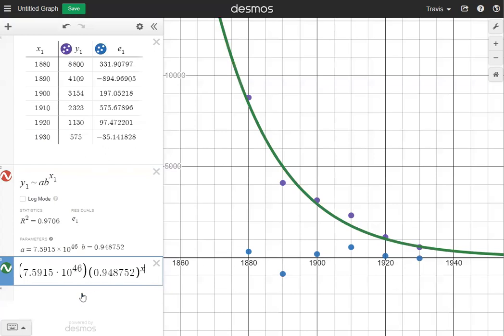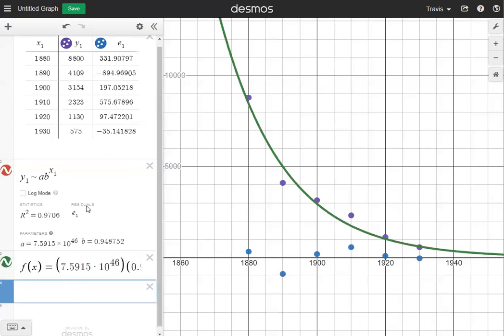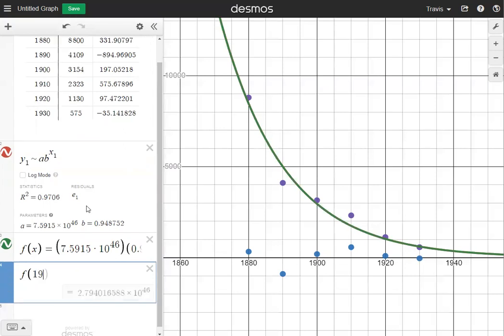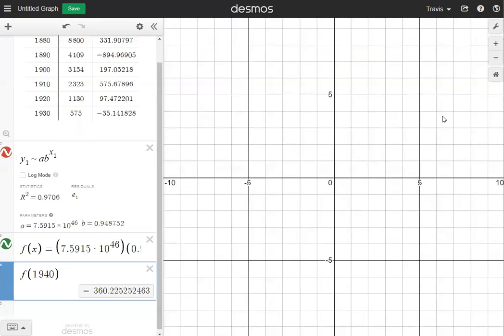We're going to click in box number four and type in f of 1940. So our x value is 1940, and our y value is going to show up at the bottom, which we can round to the nearest whole number, which is 360. So if this chart was to continue down to 1940, the y value would be 360. So that is an exponential regression, and I hope that helps.